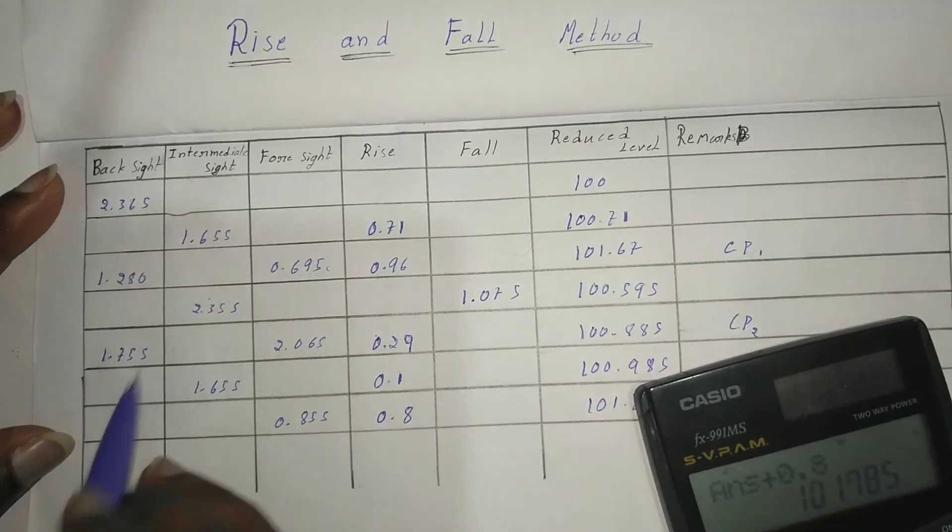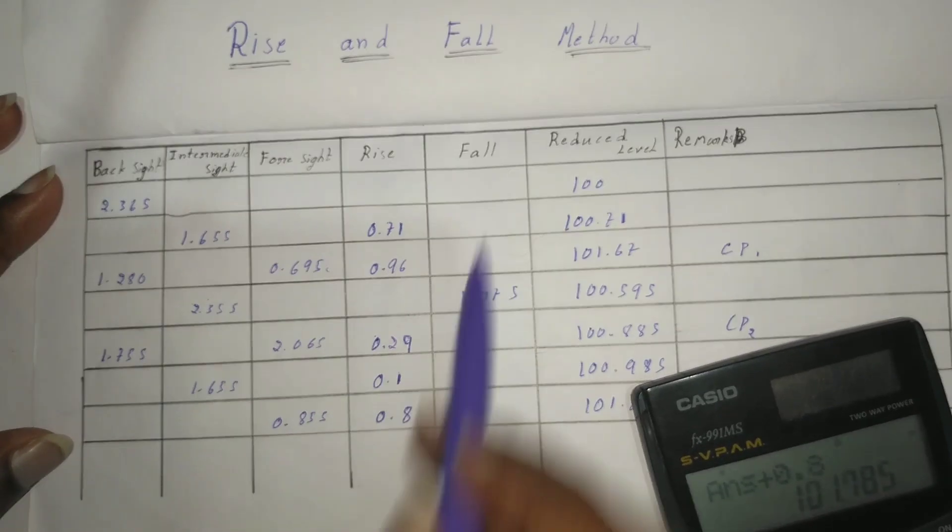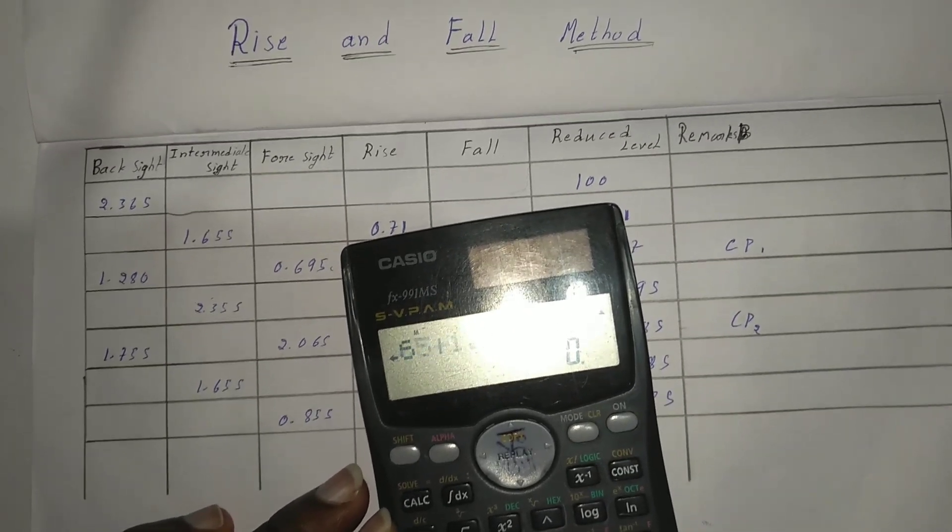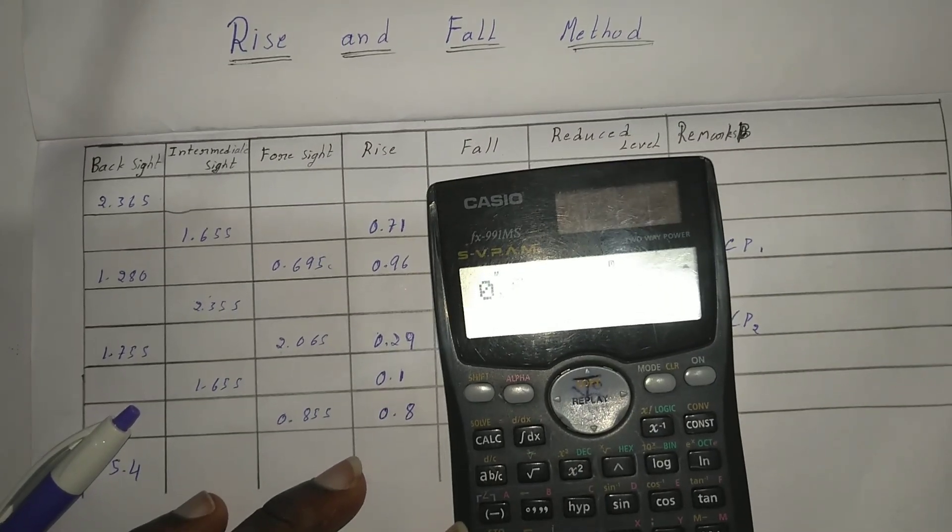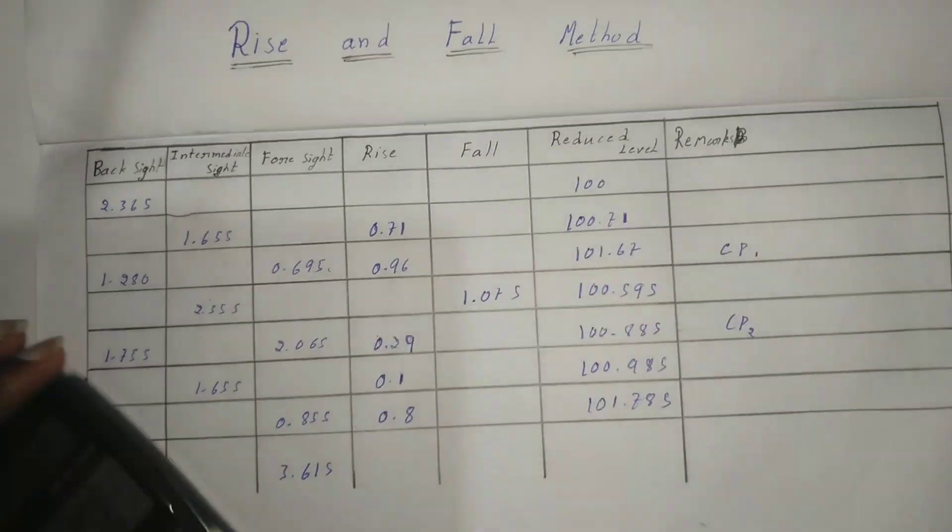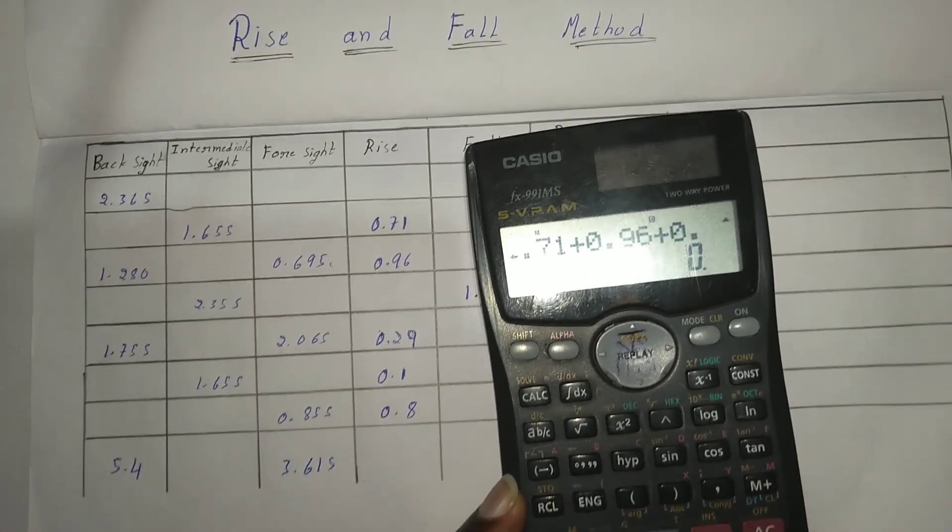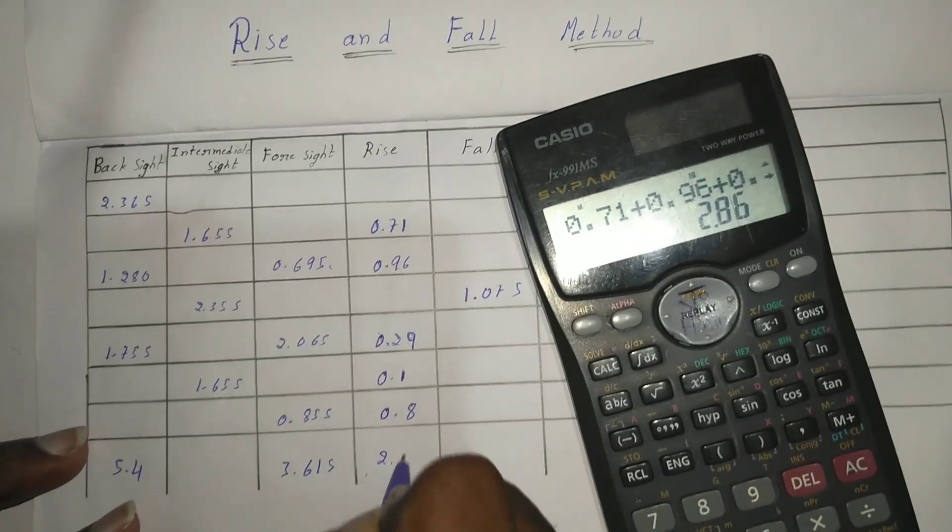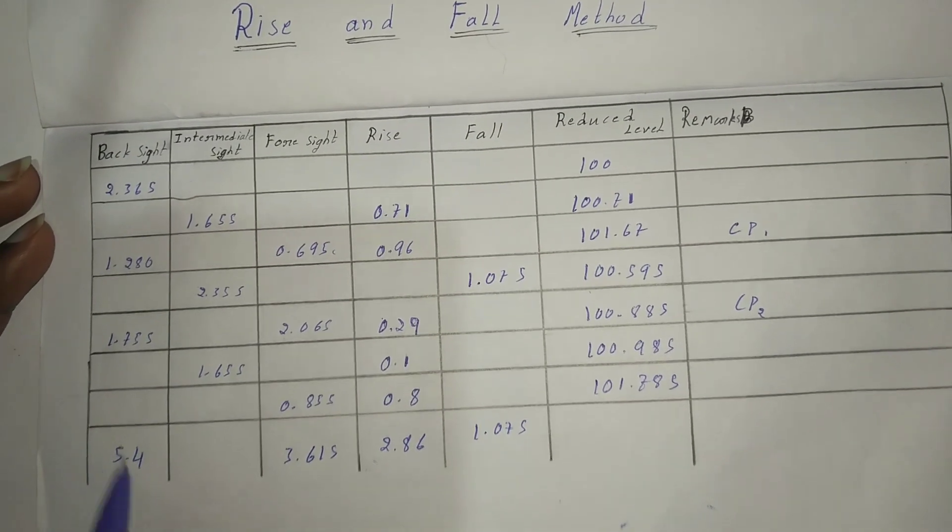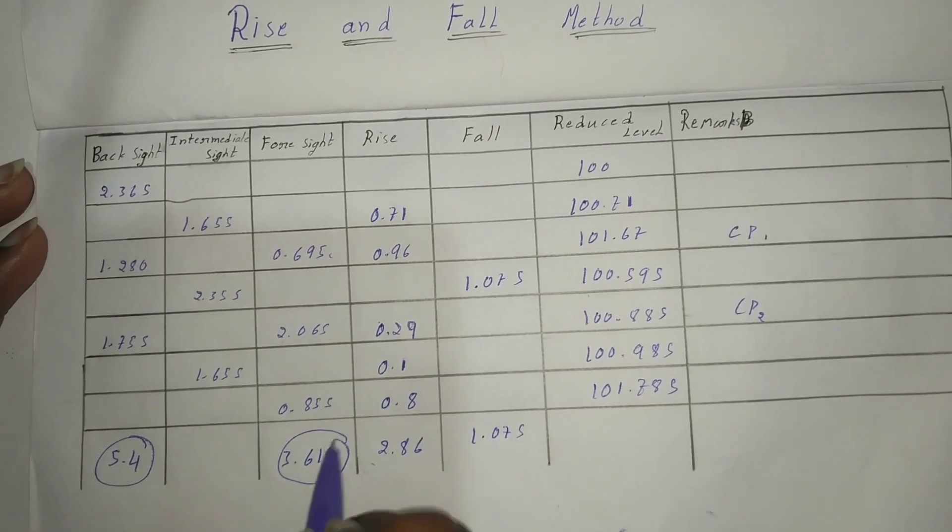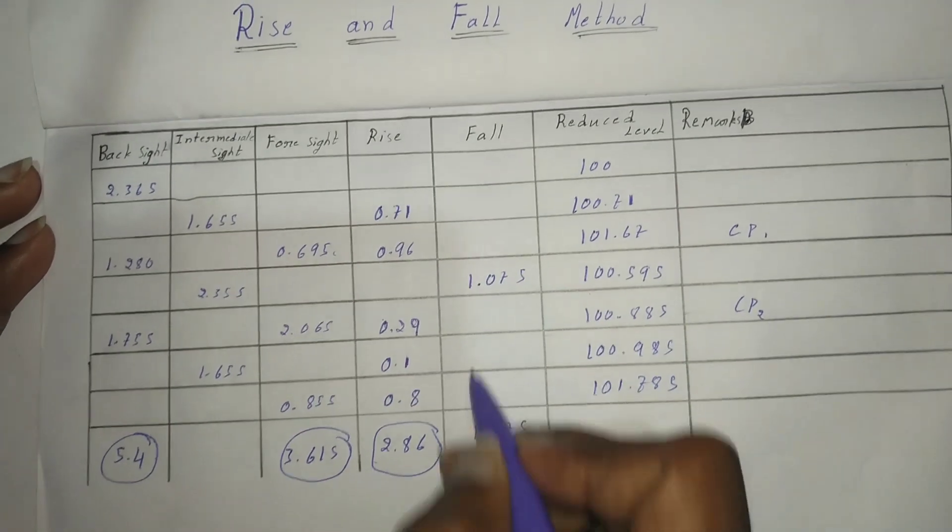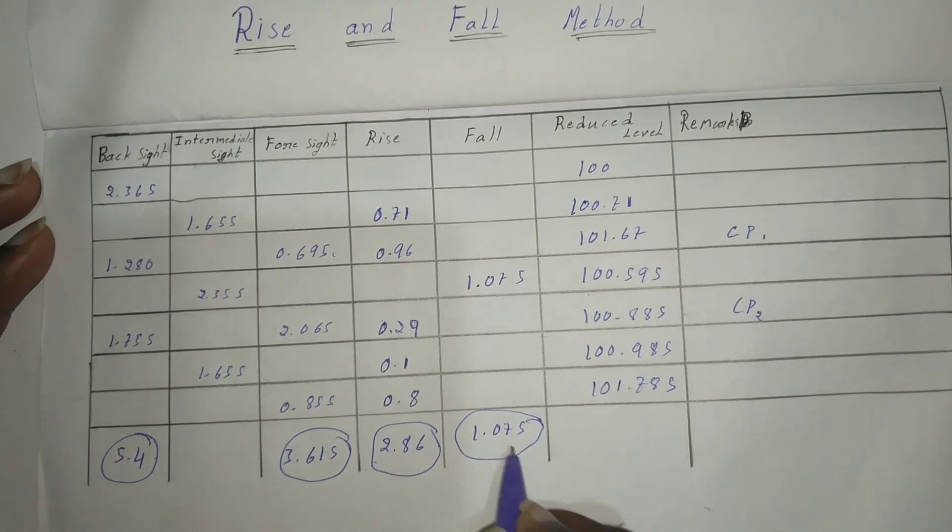Add all backsides, foresides, rise and fall values. Sum of all backsides equals 5.4. Sum of all foresides equals 3.615. Sum of all rise equals 5.4, and sum of fall equals 1.075.